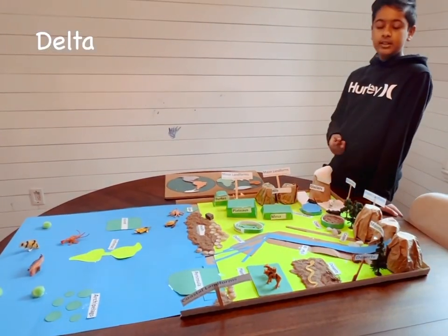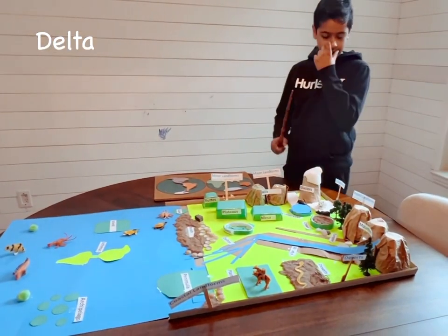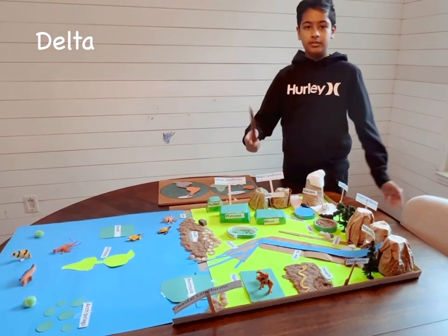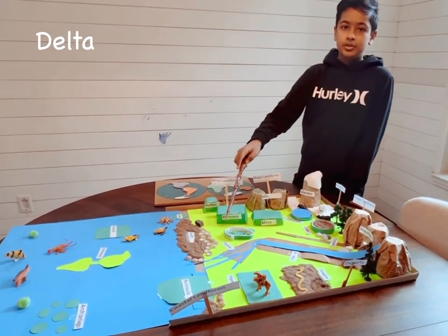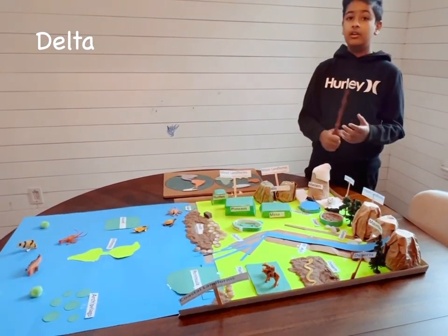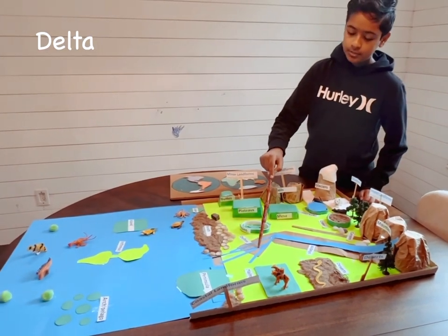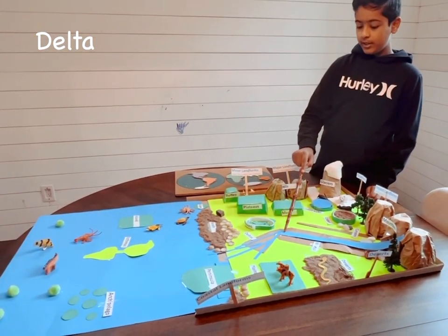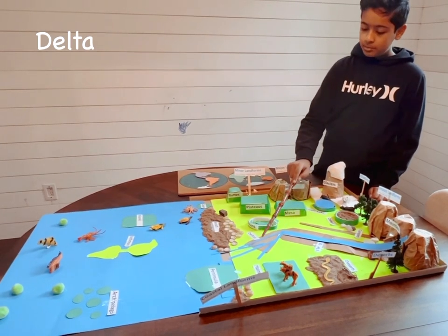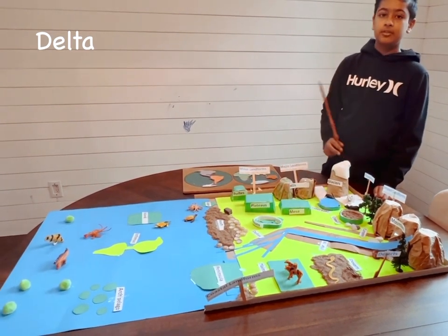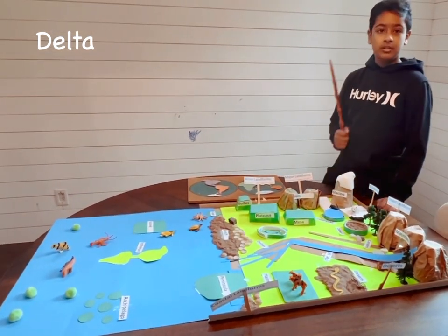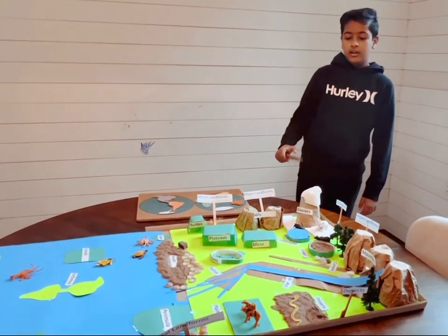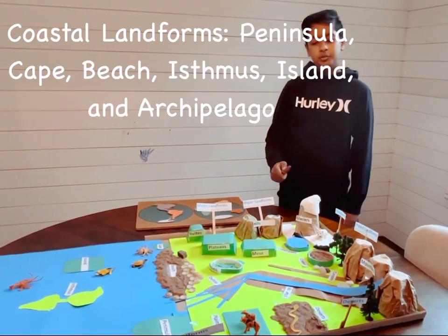A delta is basically where a river from either a valley or just a regular river starts to connect with the ocean. A delta is the mouth of the river — this is where the river water starts splitting into different streams. The land between those streams is called a delta.